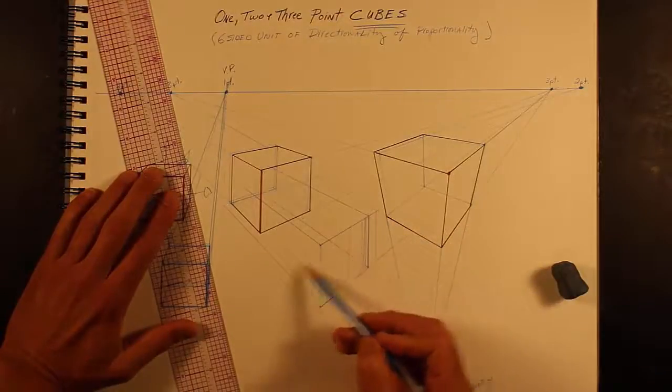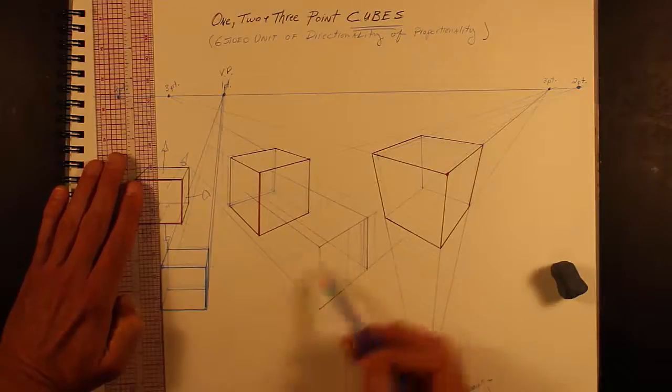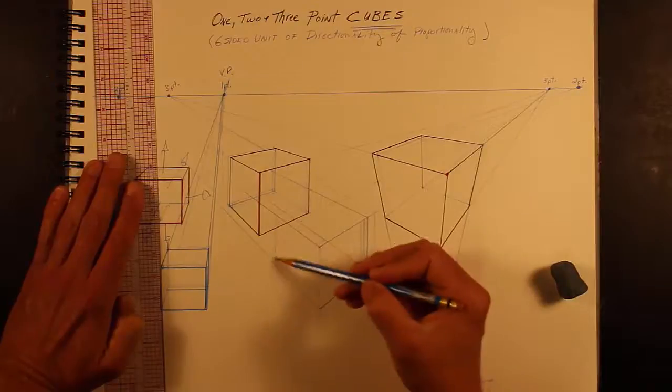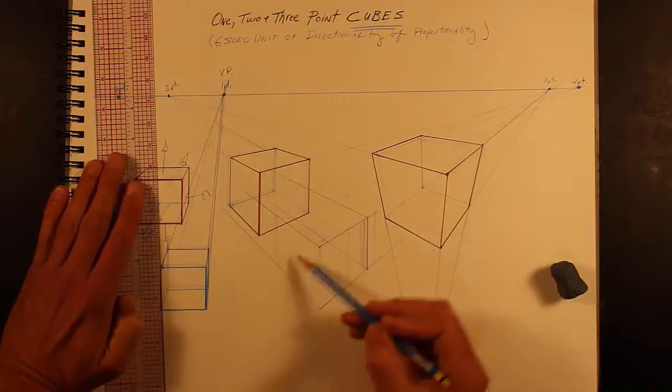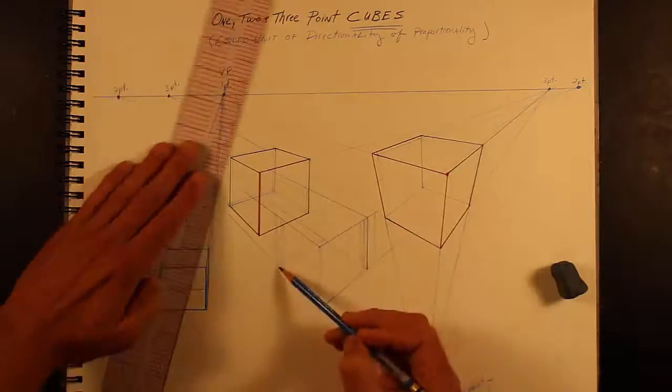Then you can do the transparent line through there. Now again, I can start on the bottom plane to figure out, well, what it's going to be. Is this going to be cube-like? Let's see if I can do that. I think that's going to look too long this way. So I'm going to actually bring it down like that, try there.